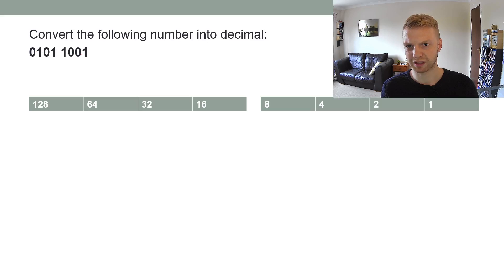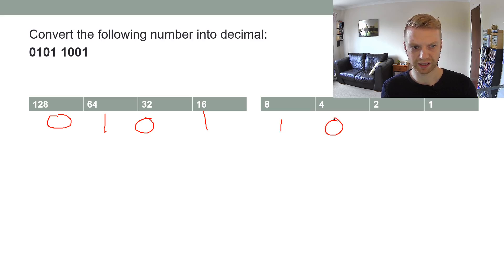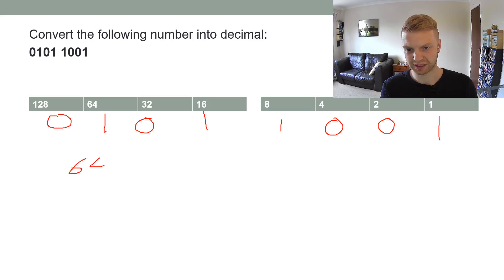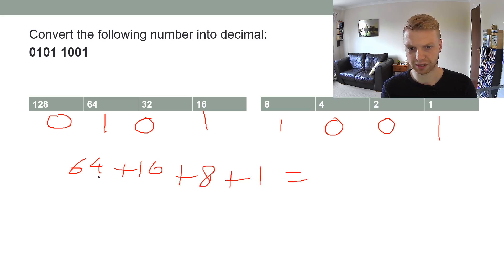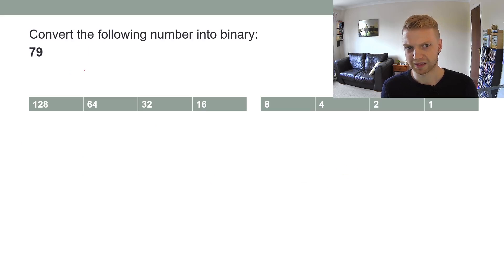To convert a binary number into decimal, you just put the zeros and ones under the column headings. Then you look at where the ones are: 64 plus 16 plus 8 plus 1 gives us 89. And that's it.